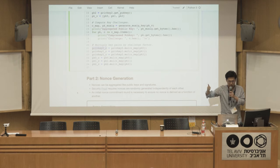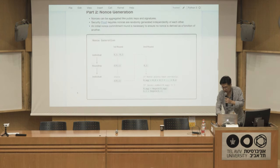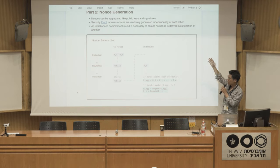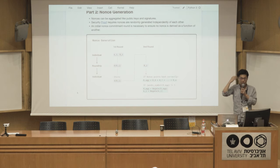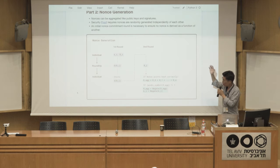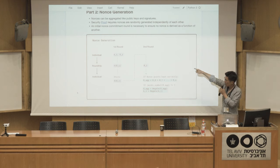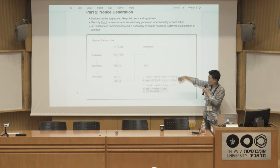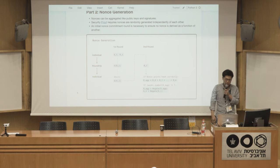We create challenge factors for every individual key pair and tweak both pubkey and private key. When we sign, we need to create nonces, and there's one important thing to be aware of: the security proof of MuSig relies on the nonces being random. Since I can't know that someone else isn't generating their nonce point based on mine, there's a first round where we share commitments to nonce points, and in the second round we reveal the actual nonce points, which are then aggregated to create the aggregated nonce point.